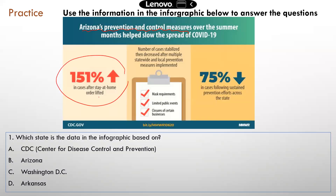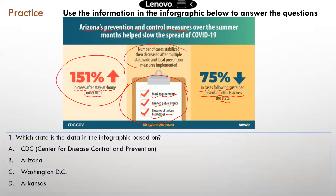The first box shows a 151% increase — the arrow pointing up means an increase — specifically a 151% increase in cases after the stay-at-home order was lifted. On the other side, a down arrow means cases are going down: a 75% decrease in cases following sustained prevention efforts across the state. Those prevention efforts include mask requirements, limited public events, and closures of certain businesses. There is also a further explanation: the number of cases stabilized then decreased after multiple statewide and local prevention measures were implemented.